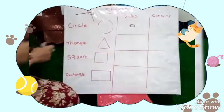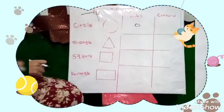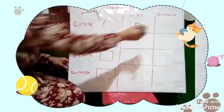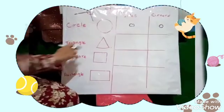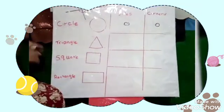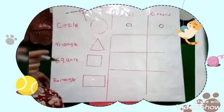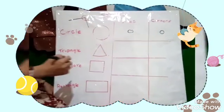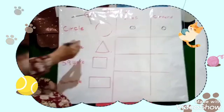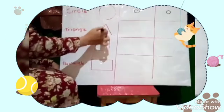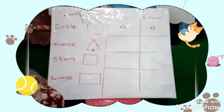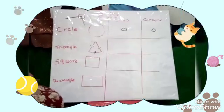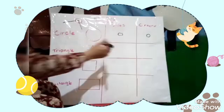And the corners — how many corners? Zero. Zero. Now, triangle — how many sides? Let's count with me. One, two, three. How many sides? Three. Three.